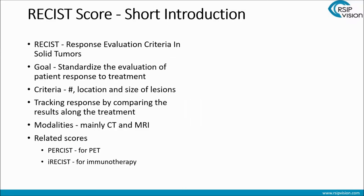Just a few words about the RECIST score. It stands for Response Evaluation Criteria in Solid Tumors. The goal here is very reasonable — there was a need to standardize the evaluation of patient response to treatment. The criteria are mostly about the number of the lesions, the location of the lesions, and the size of the lesions. Once we measure these criteria, the goal is to track the response to treatment and compare previous results with new results following the treatments. The modalities used are mainly CT and MRI, and the related scores are PERCIST for PET and iRECIST for immunotherapy.